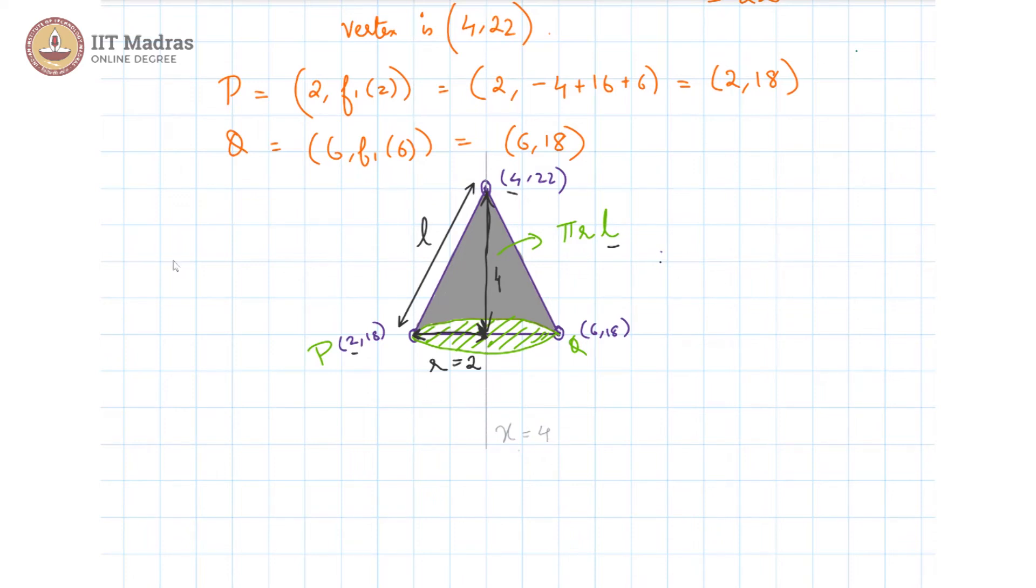So l is going to be the square root of 2 square plus 4 square, which is root 20, which is 2 root 5. So we have r equals 2 and l equals 2 root 5. This gives us the curved surface area is pi into 2 into 2 root 5, that is equal to 4 root 5 pi square units.